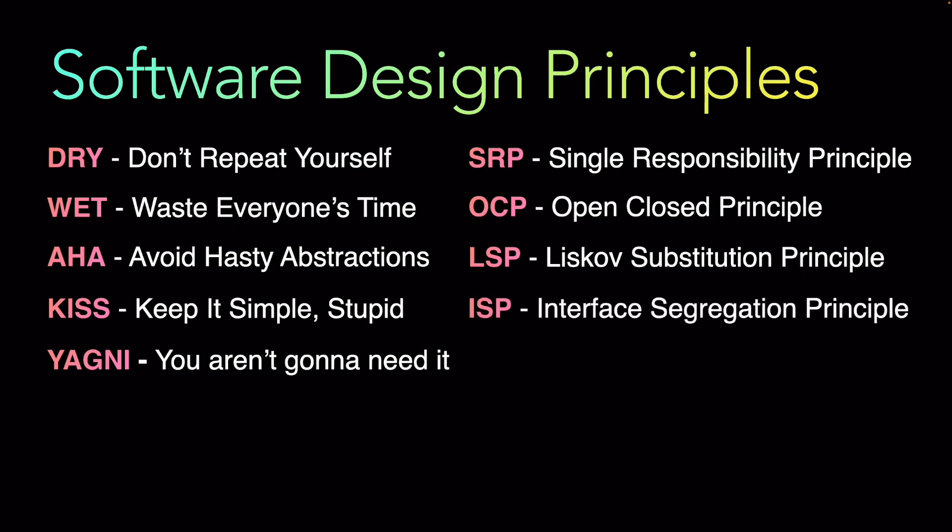The next principle is ISP — the Interface Segregation Principle. Clients should not be forced to depend on interfaces that they do not use. This principle promotes creating smaller, focused interfaces that are easier to understand and maintain. For example, say you have an interface called Movable that has methods for moving forward, backward, left, and right. Now you have a class called Car that implements Movable but only needs to move forward and backward. It would be better to create a separate interface — say ForwardBackwardMovable — with only those two methods, rather than having Car implement the full Movable interface that includes left and right methods it does not need.